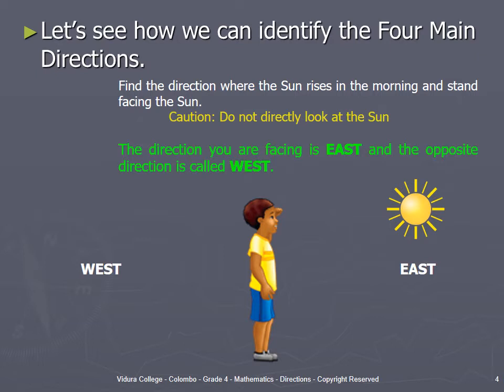Let's see how we can identify the 4 main directions. Find the direction where the sun rises in the morning and stand facing the sun. But don't directly look at the sun. When you stand facing the sun, the direction you are facing is East. And the opposite direction is called West.